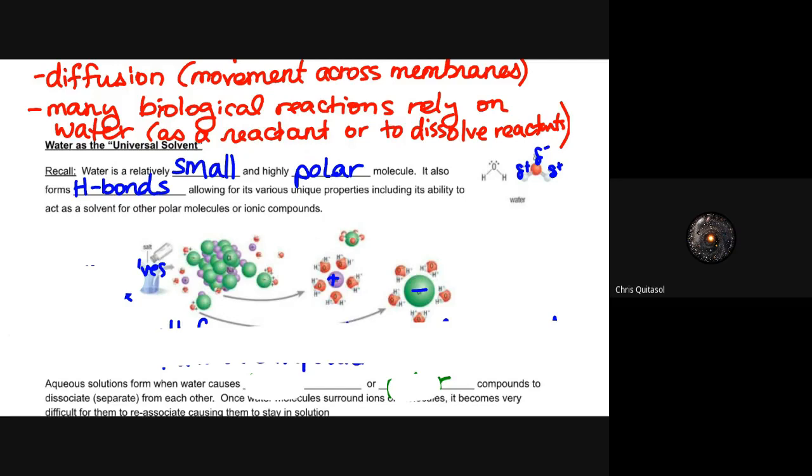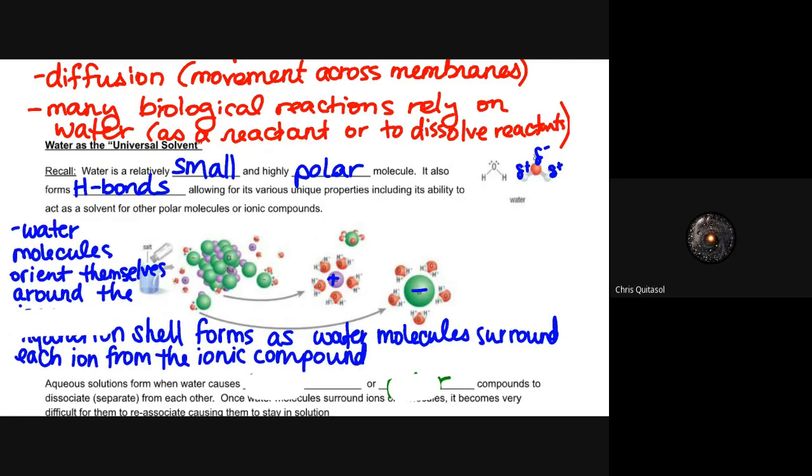When you ask those questions about hydrogen bonds forming, we need to think about it in terms of water as a dissolver or a solvent. Those water molecules orient themselves around the ions, and that hydration shell forms as a result of water molecules surrounding each ion from that ionic compound. So as that salt dissolves in water, the sodium and chloride disassociate from each other as their respective ions. And this is something you might have heard or might be hearing for the first time, a hydration shell.